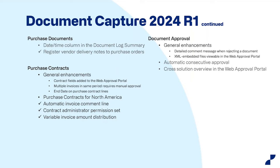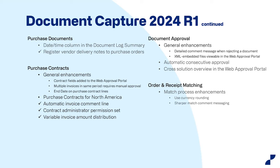For document approval: general enhancements to the approval part, including automated consecutive approval — meaning you don't have to approve the same document twice if you're approving both on your own behalf and on behalf of others through shared approving. The web approval portal now shows a cross-solution overview, so if you have Expense Management and DomoCapture documents in the same portal, you can easily see which documents need your approval. For order receipt matching: currency rounding is being used and there is better comment messaging for match handling.